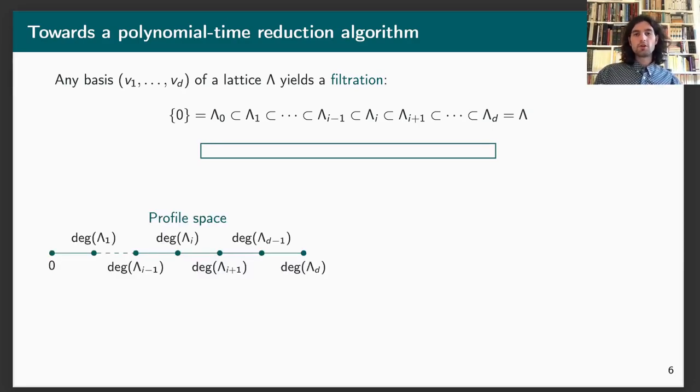Now, you might want to quantify the quality of your filtration, and to do so, we do a bit of quantization. We basically use the co-volume. Actually, we're using the degree here, which is the logarithm of the co-volume of each of the sub-lattices appearing in the filtration. So, in the end, you get some bunch of real numbers which corresponds to the degree of each element appearing in your filtration.